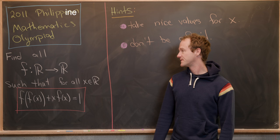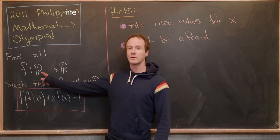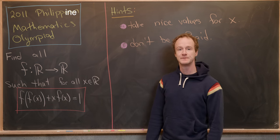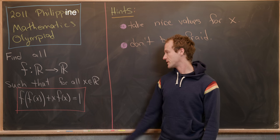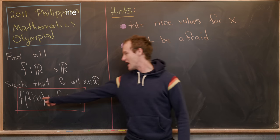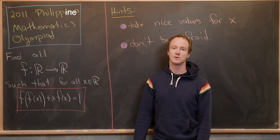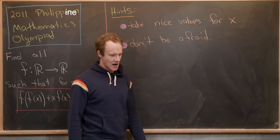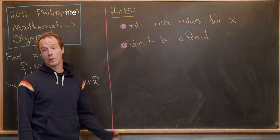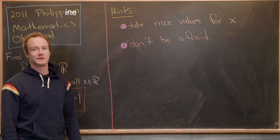What we want to do is find all functions from the real numbers to the real numbers, such that for all real numbers x, we have f(f(x) + x·f(x)) = 1. I'll give you guys a couple of hints if you want to try this problem before we look at a solution, and then we'll jump into a solution.